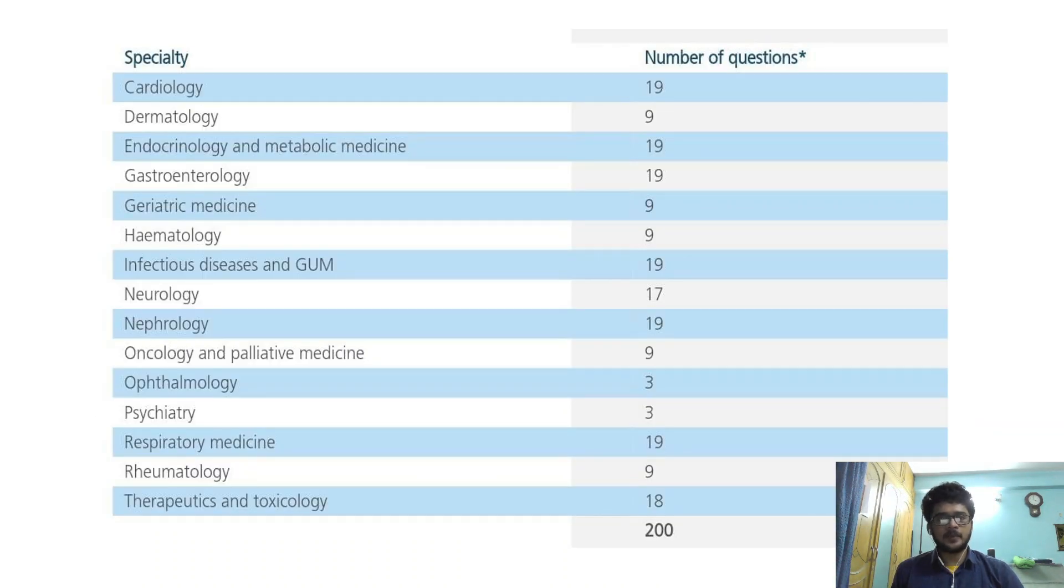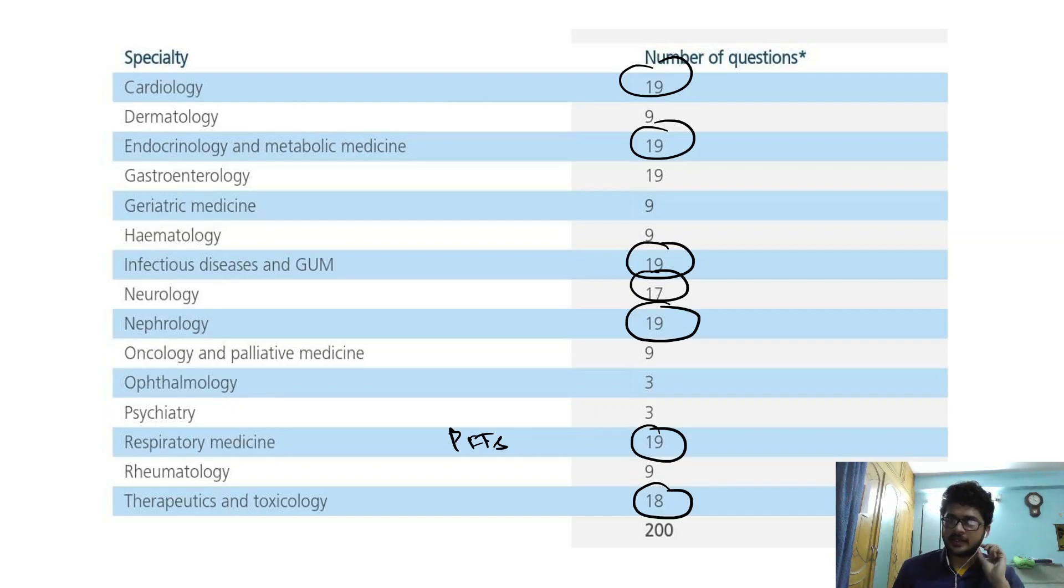This is the split up: you can see cardiology, endocrinology, infectious diseases, neurology, nephrology, respiratory medicine - especially PFTs, you have to be very thorough with PFTs - and then therapeutics and toxicology. These are going to have a very solid weightage for this exam. Even though the mark split doesn't include statistics, you can expect around one to two MCQs from biostatistics. If you have prepared well, you can take probably a day or two to revise your biostatistics from your Part 1.